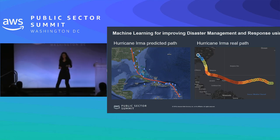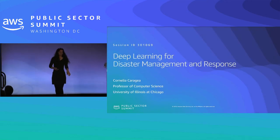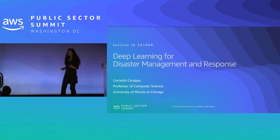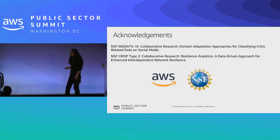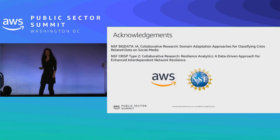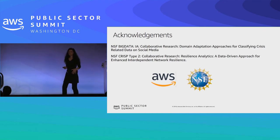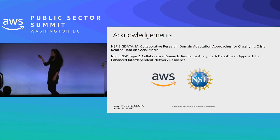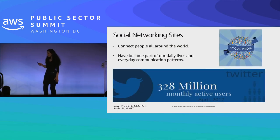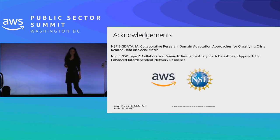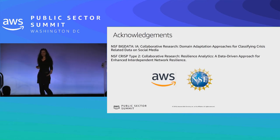I'm very excited to be here. I'm an associate professor at the University of Illinois at Chicago, and I'm excited to talk about a project on deep learning for disaster management and response. This project was made possible through support from NSF and AWS. I started working on disaster-related research after a personal experience.